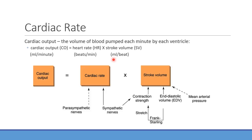For cardiac rate, the major determinants include the parasympathetic nerves, which decrease heart rate. The neurotransmitter affecting that is acetylcholine acting on muscarinic receptors. The sympathetic nerves, using norepinephrine — and epinephrine can play a similar role — increase heart rate.